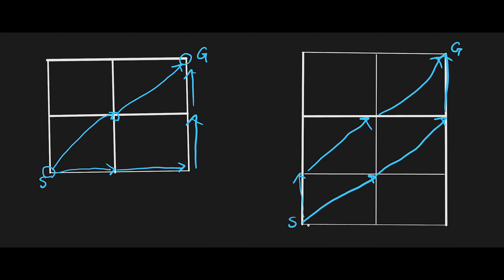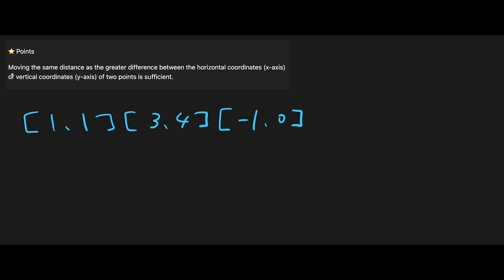If we move horizontally and vertically only, we need one, two, three, four, five seconds. Why does this happen? We can move diagonally — that means we can move vertically and horizontally at the same time, saving seconds. The key point is: the distance equals the greater difference between the horizontal or vertical coordinates of two points.